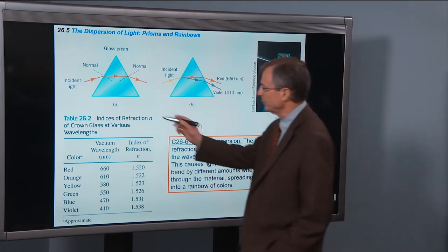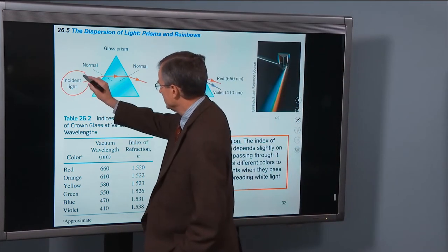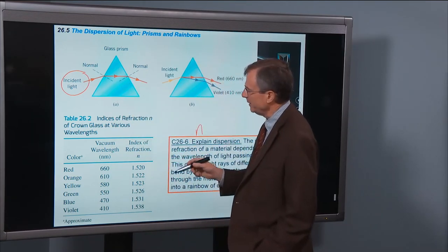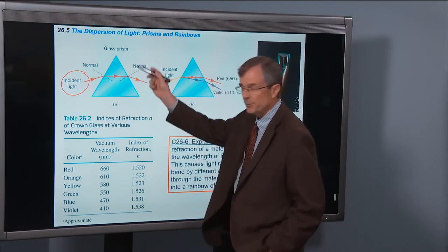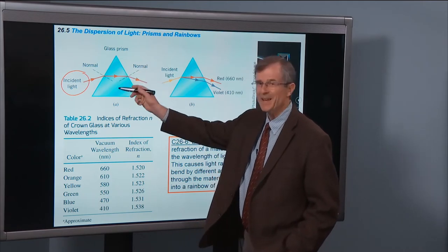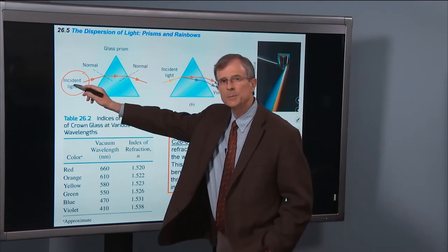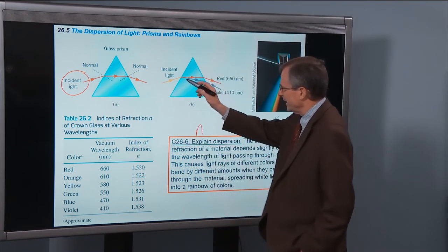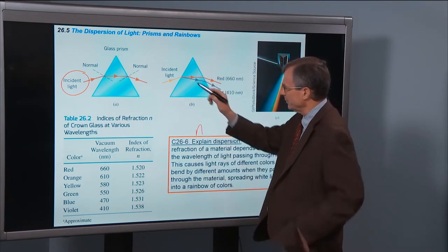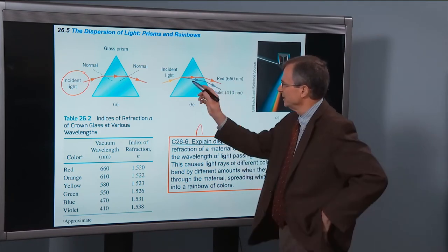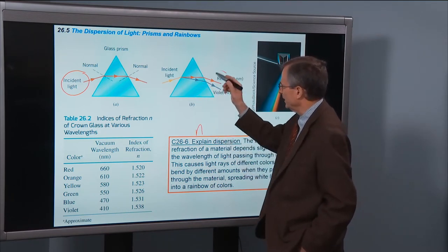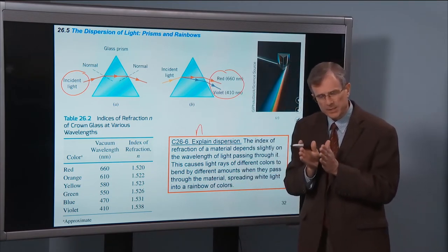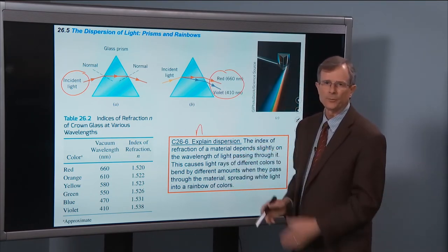So in the case of a prism, you've got some light. Depending on the wavelength, the index of refraction of the material depends on the wavelength of light that's passing through it. And so if the light is red, that index of refraction will give a different angle of refraction than it will for violet. And you get this spreading of the colors as the light is refracted through the prism.